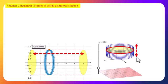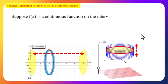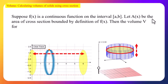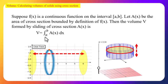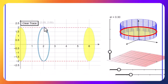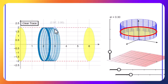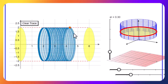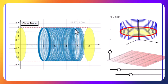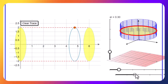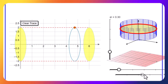Formally, suppose f(x) is a continuous function on the interval [a, b] and A(x) is the area of the cross-section defined by f(x). Then the volume equals the integral from a to b of A(x) dx. When we slide the cross-section, it forms a 3D object; collecting all such cross-sections gives the volume of the solid.